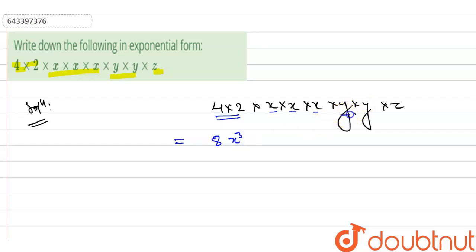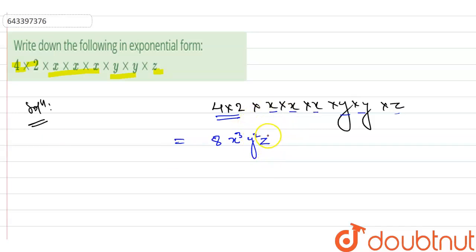And y is multiplied 2 times, so we write y squared. And z appears a single time, so the power of z will be 1, meaning just z. So our final answer is 8 x cubed y squared z.